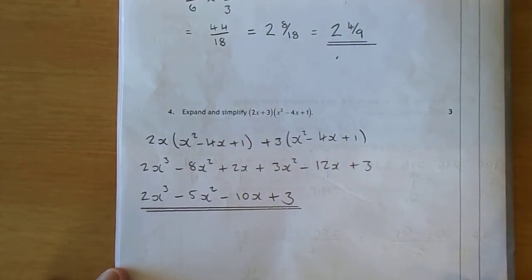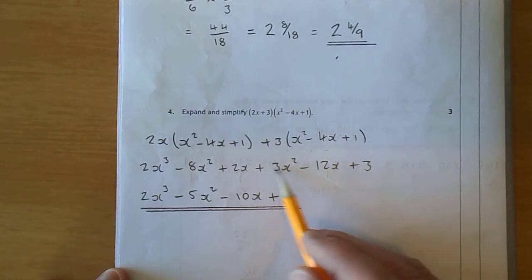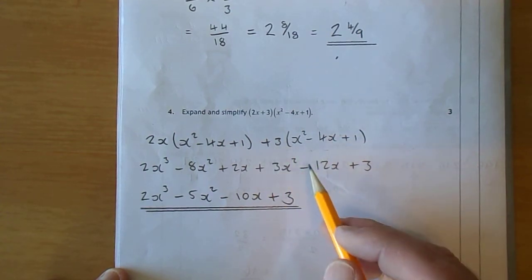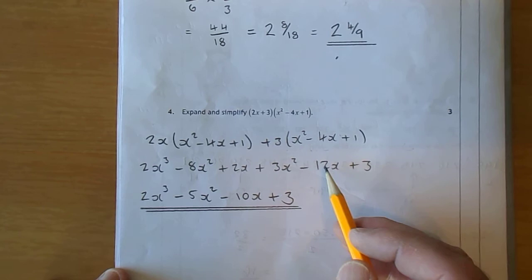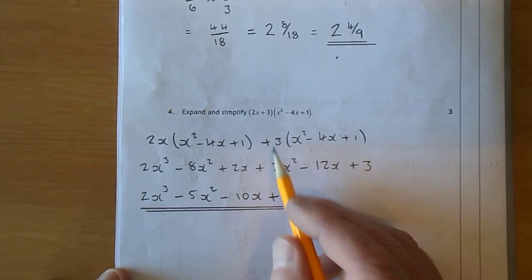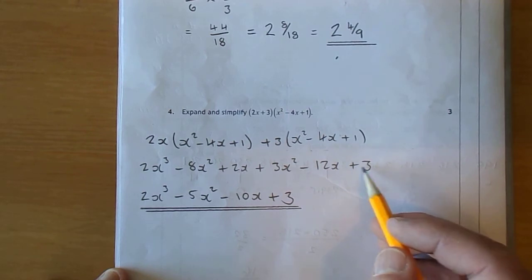Moving on to the second 3. Plus 3 times x squared is plus 3x squared. Plus 3 times minus 4. A positive times a negative is a negative. And 3 times 4 is 12. So it's negative 12. And don't forget there's an x there. Positive 3 times positive 1 is positive 3.